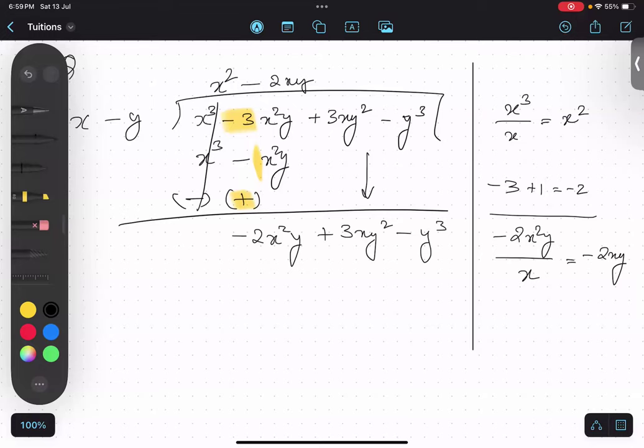Minus 2xy on the top. Now I will multiply this whole thing with this. So x into minus 2xy is minus 2x²y. And minus y into minus 2xy is plus 2xy². Change the sign.